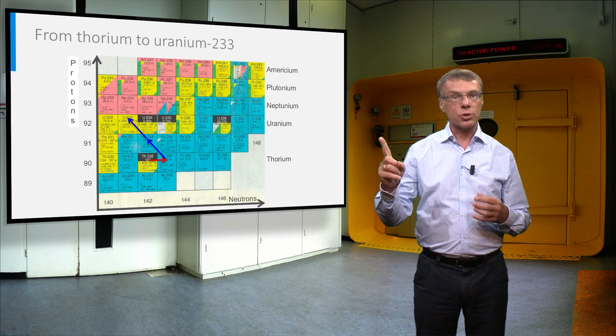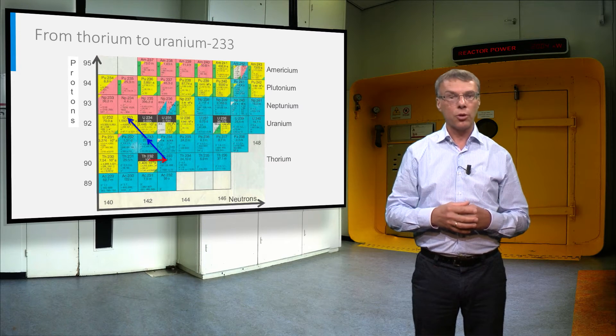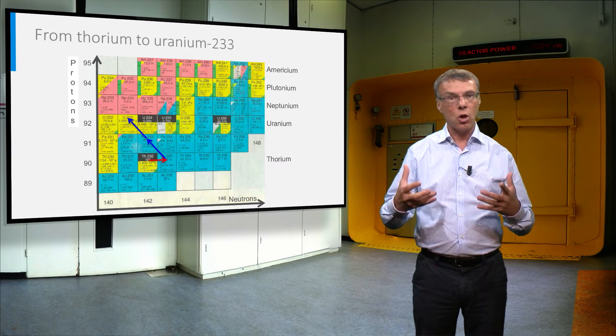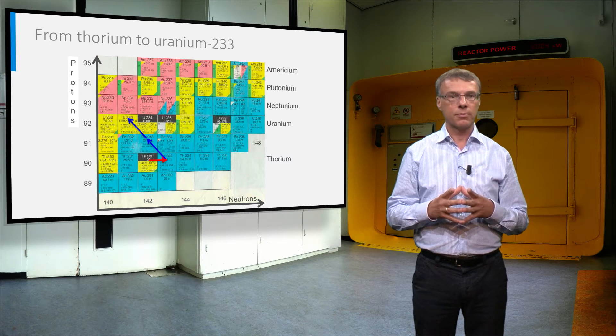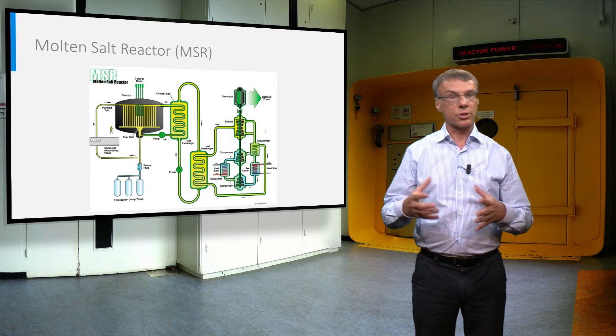Because we need one neutron to sustain the fission chain reaction, and another one to convert thorium into uranium, we can have a sustained fission chain reaction only if the reactor is extremely efficient with neutrons. Fortunately, reactors like this exist, namely the molten salt reactor.